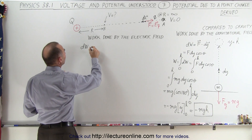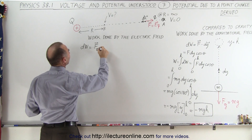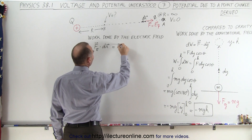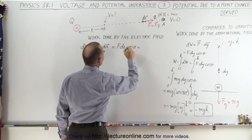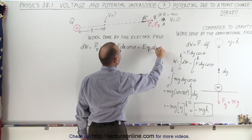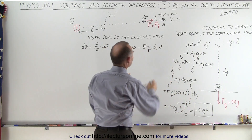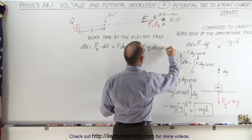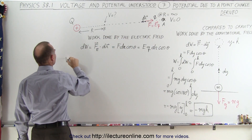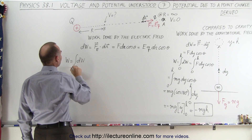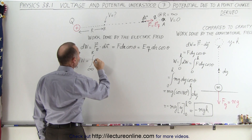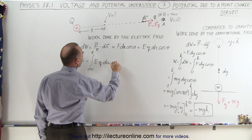The small amount of dW is equal to the force due to the electric field times the displacement dr, which is F dr times cosine of theta. The force is the magnitude of the electric field times the magnitude of the charge, times dr, times cosine of theta. The total work done is equal to the integral of all the dW's going from infinitely far away to the distance r, which equals the integral from infinity to r of Eq dr cosine of theta.